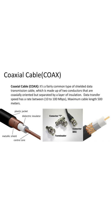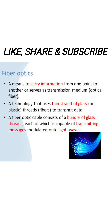The second type is coaxial cable — a fairly common type of sealed data transmission cable made up of two conductors that are coaxially oriented but separated by a layer of insulation. Data transmission speed is between 10 to 100 Mbps and the maximum length is 500 meters.